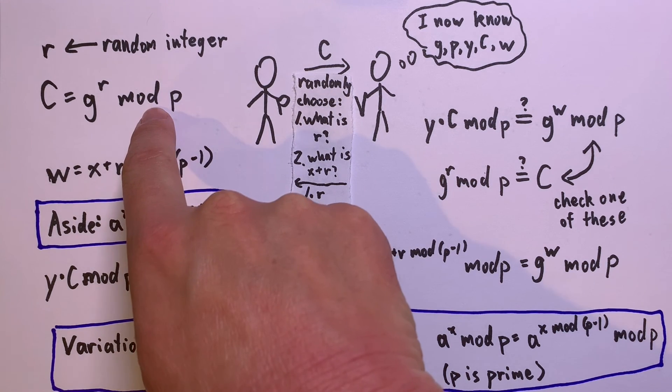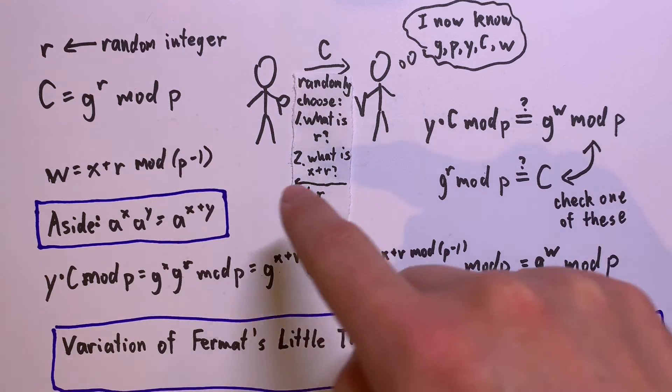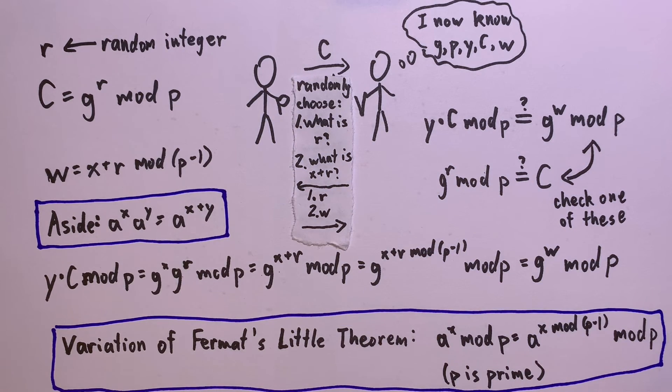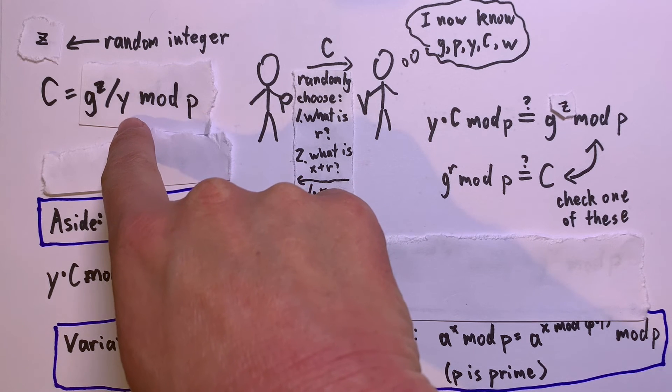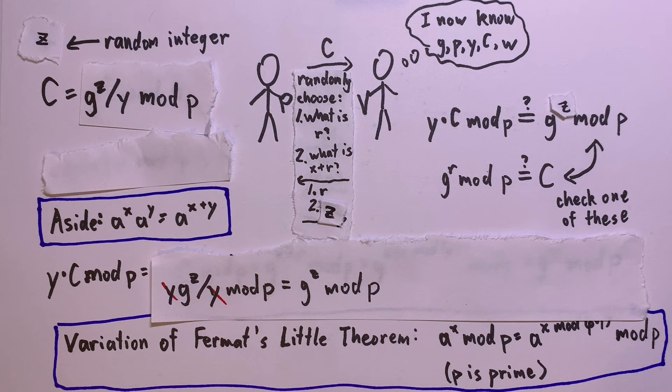If you give c equals g to the r mod p, then you can't answer what x plus r is. If you give c equals g to the z divided by y mod p, then you can't answer what r is! If the prover runs for many rounds and randomly asks for either x plus r or r each time, the best you can do is make a random guess which you prepare for, and you only guess correctly with 50% probability. Unless, of course, you actually know x.